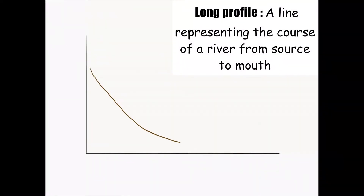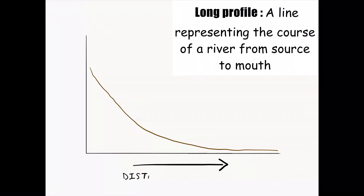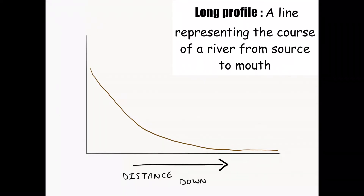We'll start off first of all with the river long profile, a line that represents the course of the river and its journey from the top of the river, also known as the source, down to the mouth of the river, which is where your river will meet your sea or your ocean. It is effectively the end of the river journey.